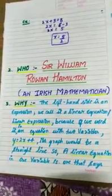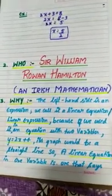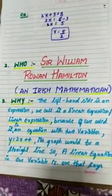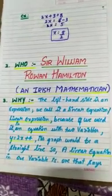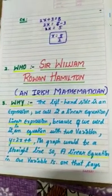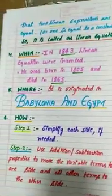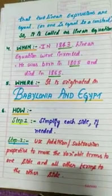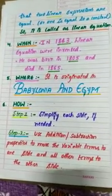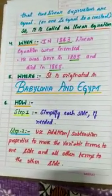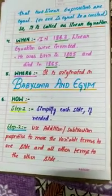The third point is: why is it called a linear equation? It is called a linear equation because if we use an equation with two variables, such as y equals 2x plus 4, its graph would be a straight line. A linear equation in one variable says that two linear expressions are equal, or one is equal to a constant. The origin of the name 'linear' comes from the fact that the set of solutions forms a straight line in the plane.